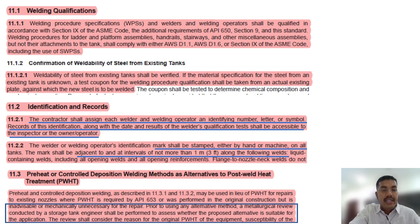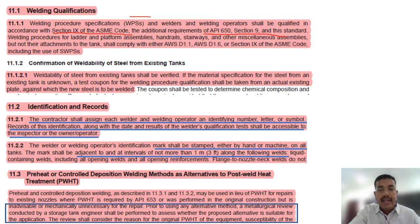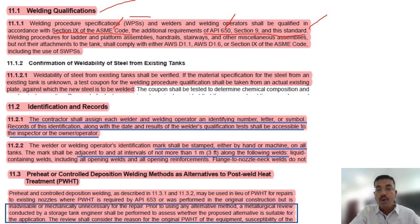For welder qualification, there are three things to remember — this is a close-book question. Welder and welding operator qualification shall be in accordance with ASME Section IX, plus the additional requirements of API 650 Section 9, plus the requirements of this standard, API 653. These three standards must be combined to establish the welder qualification.